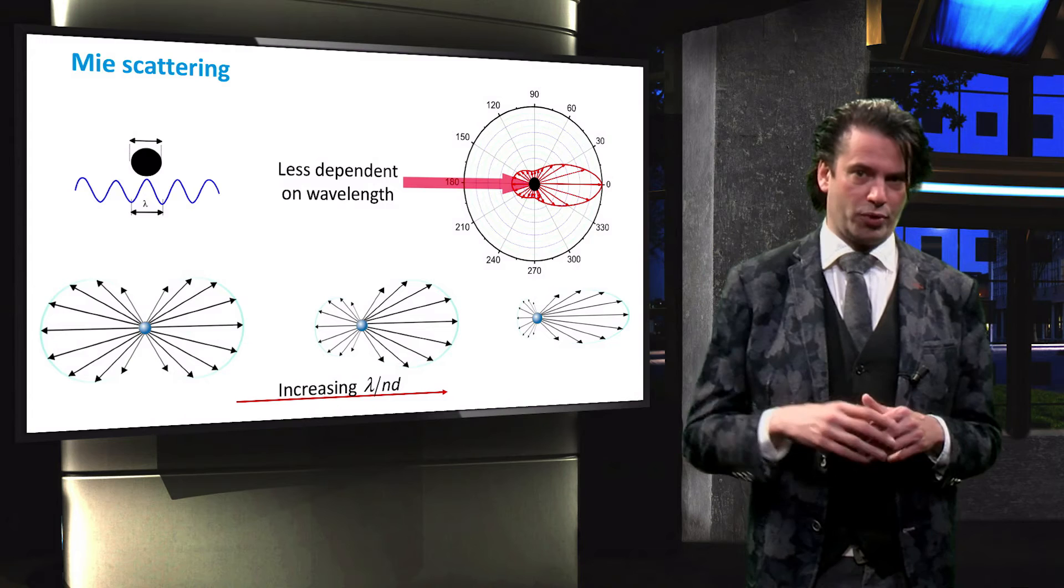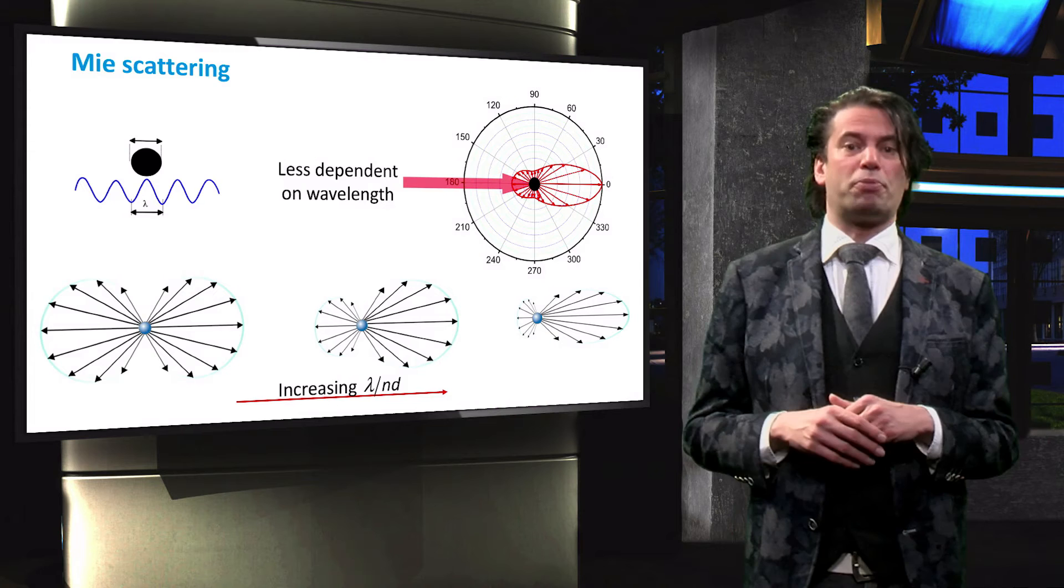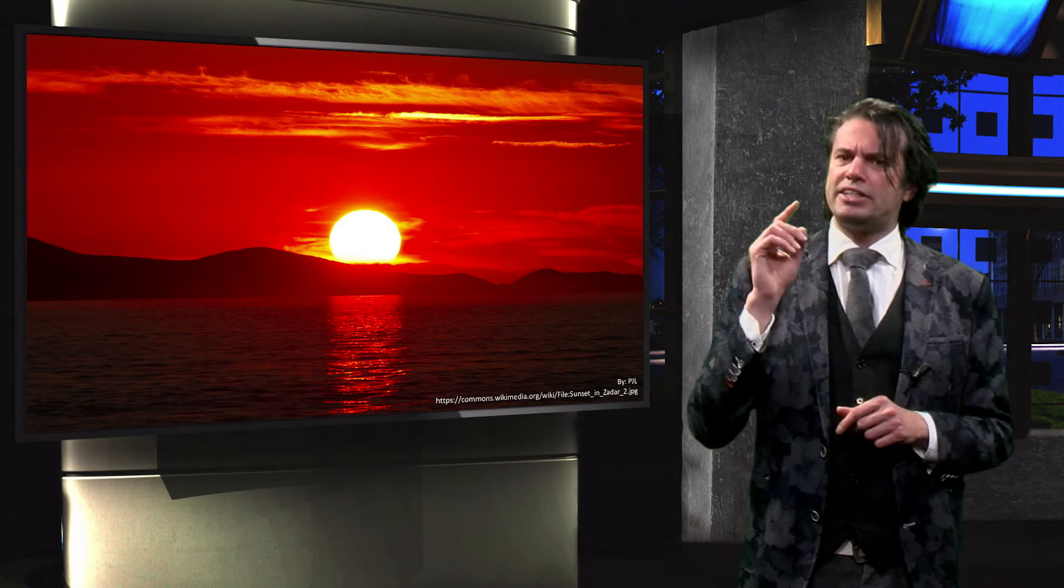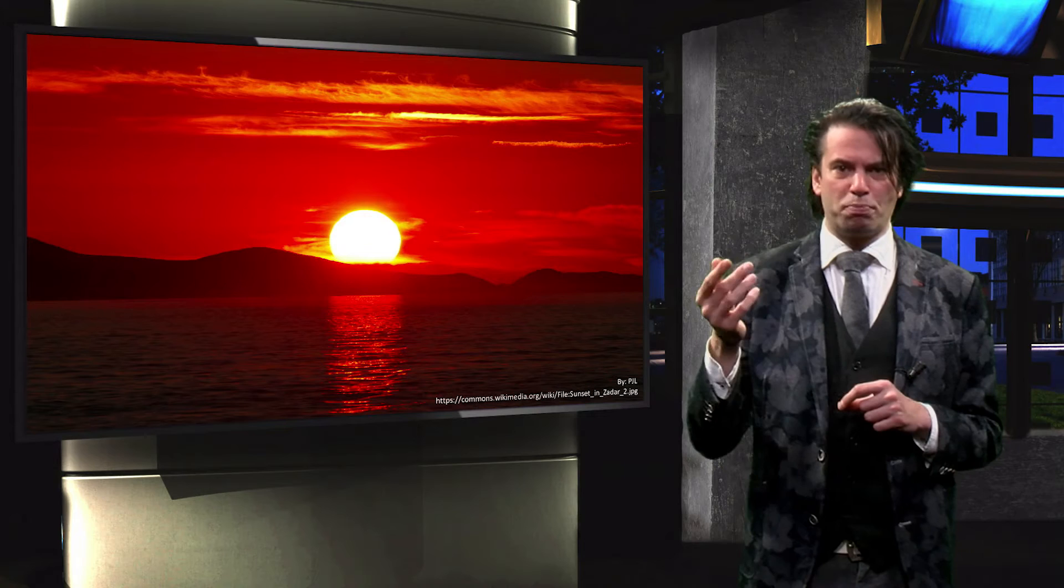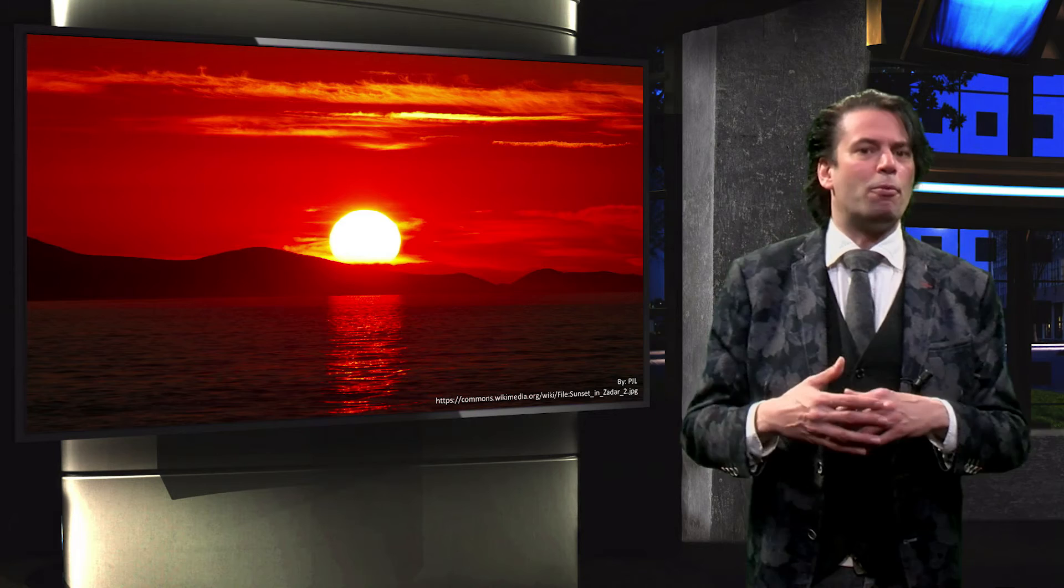The mainly forward direction of Mie scattering influences our perception of the Sun as it rises or sets. When we see the Sun setting in the evening, or rising in the morning, the Sun appears low on the horizon. Because of this angle between the Sun and our position on Earth, light has to travel a larger distance through our atmosphere than during daytime. This means that light encounters more particles in the air, and more scattering events take place.